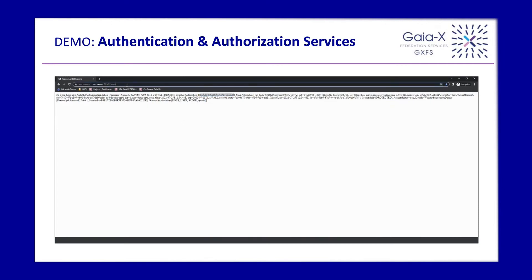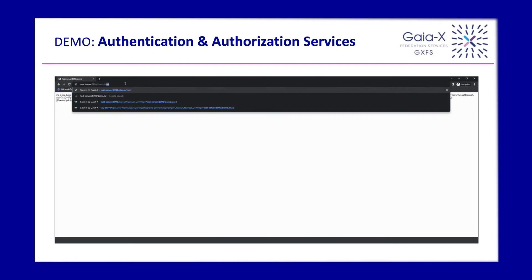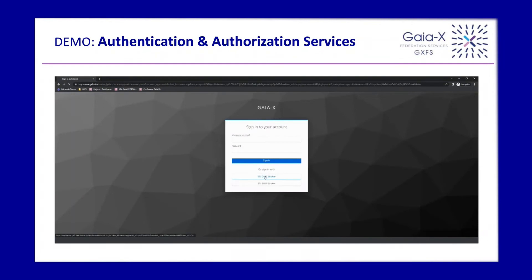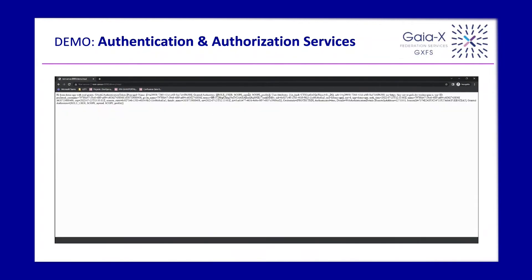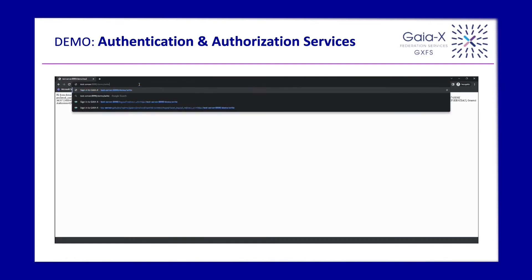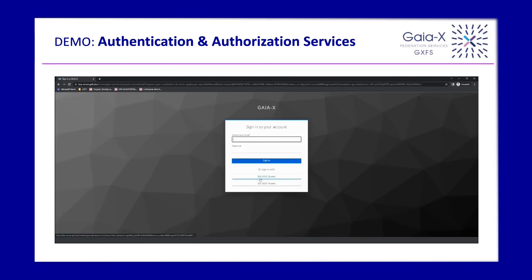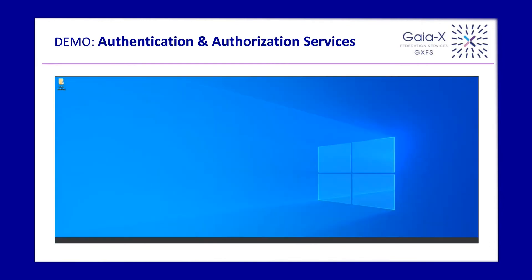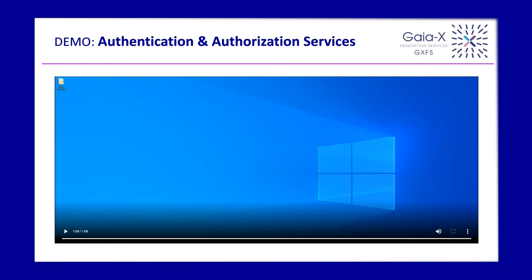The demo shows that the user has access to the web page, and then changes the resources. This demonstrates that when you change the resources in the background, authentication is requested again for different credentials to get different scopes. At the end of the day, it's an OpenID Connect protocol which allows you to integrate it in a web page and use it as you know it from Keycloak, Microsoft Active Directory, or similar systems.